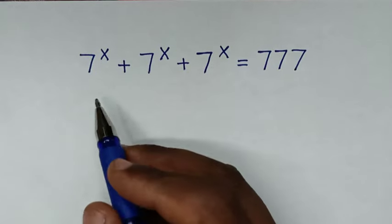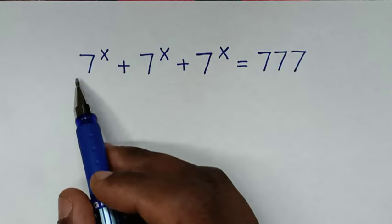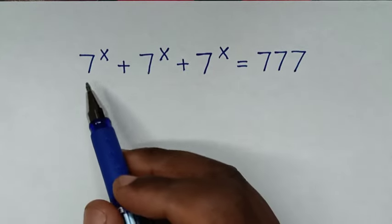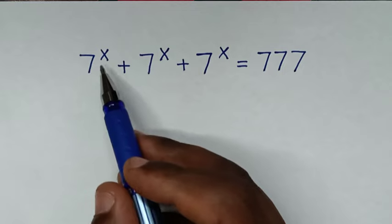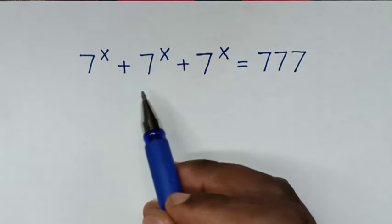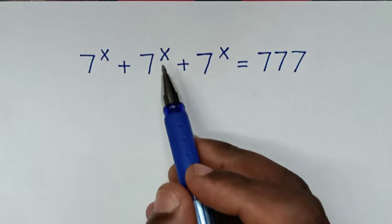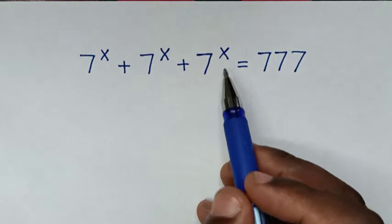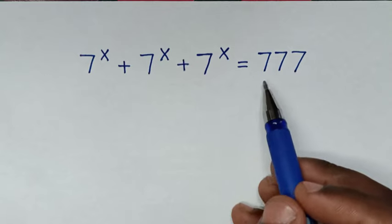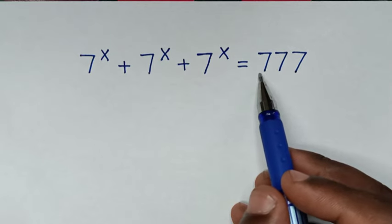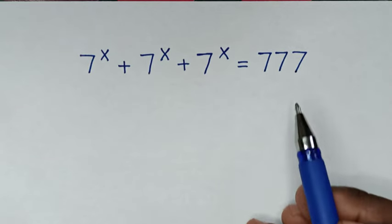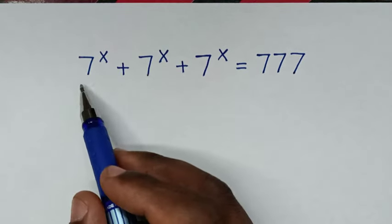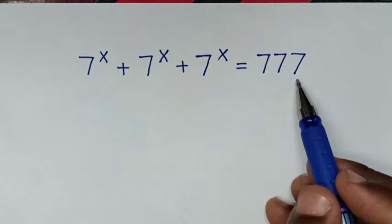Hello, you are welcome to solve this math problem, which is 7 power x plus 7 power x plus 7 power x is equal to 777, to find the value of x from this equation.